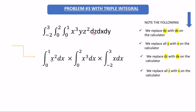So z squared dz with interval zero to one becomes x squared dx. Then the next term is x cubed with interval from zero to two, so x cubed dx, zero to two. Then y dy — replacing y with x — becomes x dx with the interval from negative two to three. Now take your calculator.